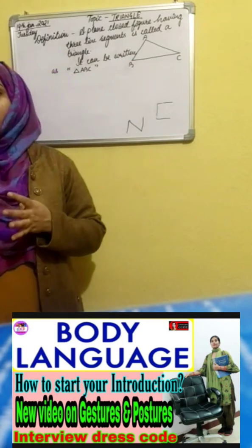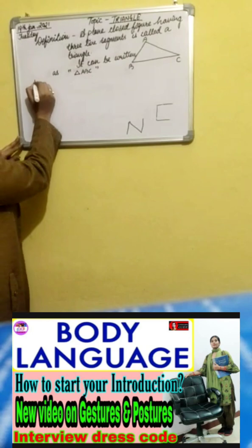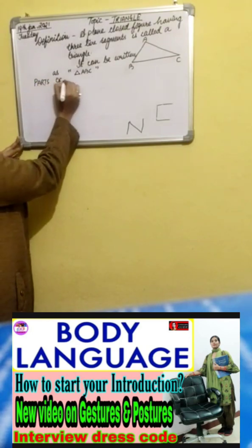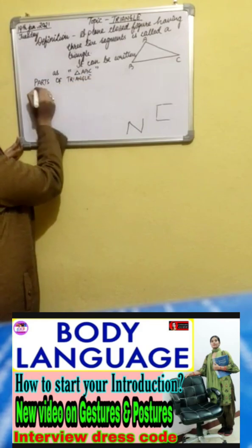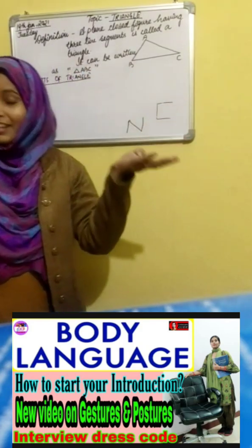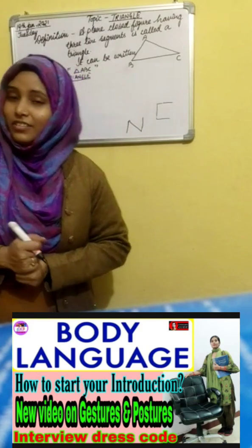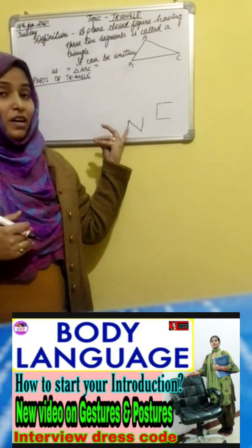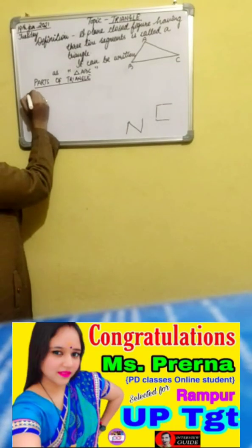A triangle is formed by three line segments. Now we come to the parts of a triangle. It is clear from the definition that a triangle — a plane closed figure having three line segments — has mainly three parts.